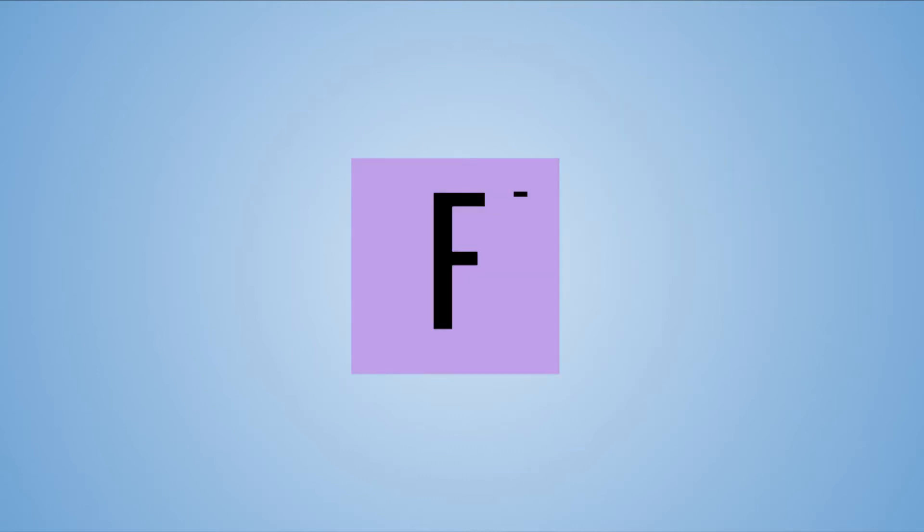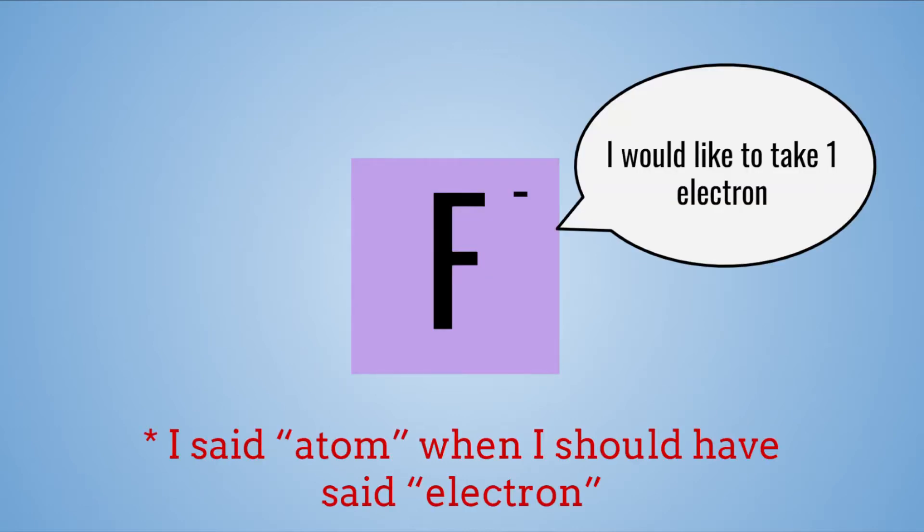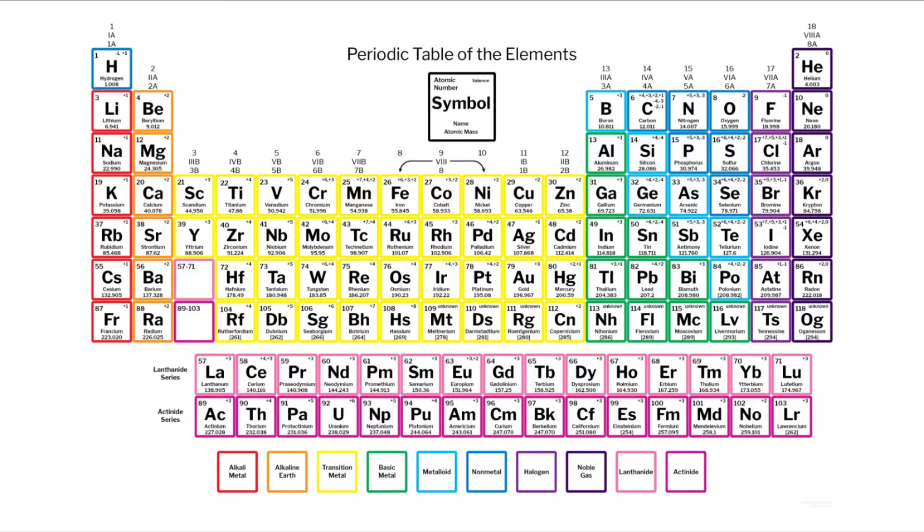Fluorine, on the other hand, has a charge of negative one, meaning that it wants to take one electron. Bonds are all about getting these charges even, and if you keep that in mind, the next part will come easy.